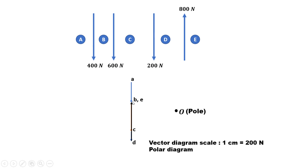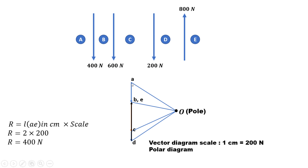The magnitude will be length AE that we have to measure, which is 2cm multiplied by the scale. Now join A with O, then B with O, C with O, D with O, and E with O — this is known as the polar diagram. The resultant is given by length AE: length AE is 2cm, so 2 multiplied by scale of 200N gives 400N. The resultant is 400N acting in the downward direction, from A towards E.